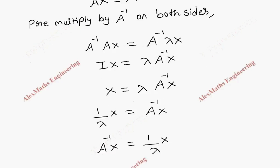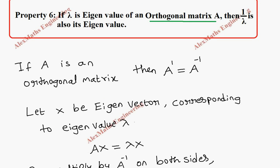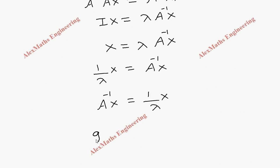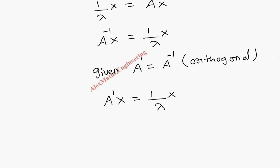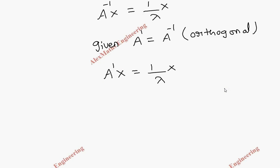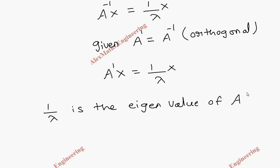Now, A is given as orthogonal, so A inverse is equal to A dash. Given A dash equals A inverse because A is an orthogonal matrix, in place of A inverse, we write A dash into X equal to 1 by lambda into X. This means 1 by lambda is the eigenvalue of A transpose, that is A dash.